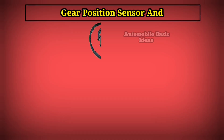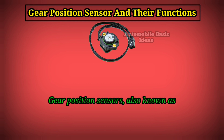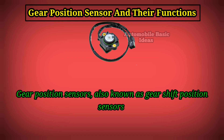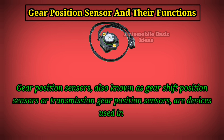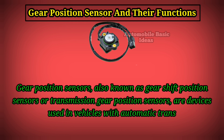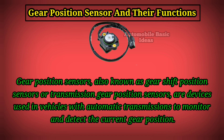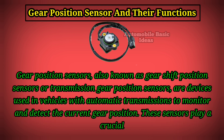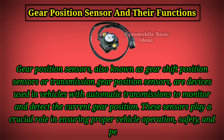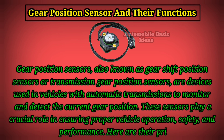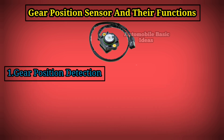Gear position sensors, also known as gear shift position sensors or transmission gear position sensors, are devices used in vehicles with automatic transmissions to monitor and detect the current gear position. These sensors play a crucial role in ensuring proper vehicle operation, safety, and performance. Here are their primary functions.